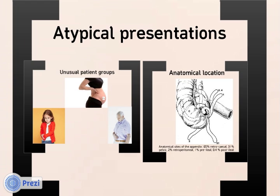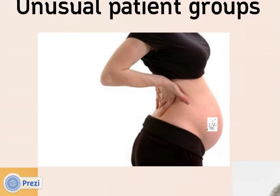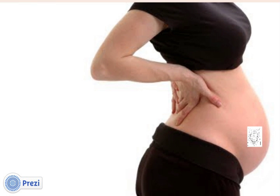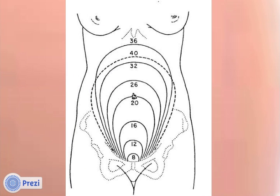More diagnostically challenging are some unusual patient groups. The first of these is pregnant women. As the uterus expands in pregnancy, it displaces the appendix upwards and appendicitis can present with right upper quadrant pain. Consider appendicitis in any pregnant woman presenting with nonspecific abdominal pain.